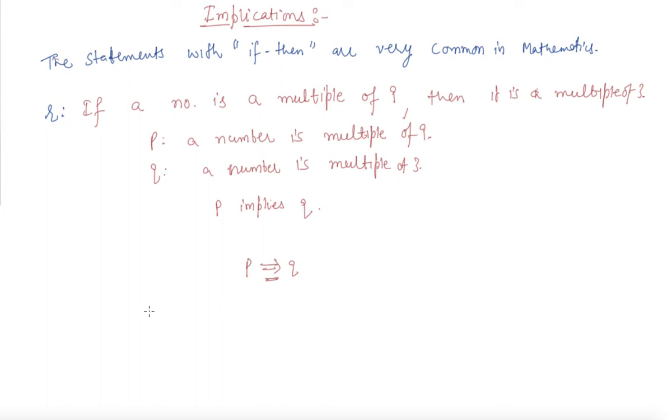We can say that if a number is not a multiple of three, then it is not a multiple of nine. If a number is not a multiple of three because Q is before, it implies not a multiple of nine.